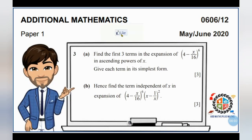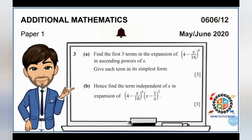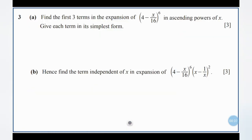Hello guys, welcome back to AdMaths Plus Maths. In this video, you will be learning how to answer another problem about binomial expansion, which you can find from Paper 1 of Additional Mathematics, Variant 2 of May/June 2020. The question is asking us to find the first three terms in the expansion of the quantity (4 minus x over 16) to the power of 6 in ascending powers of x.